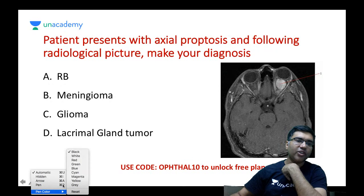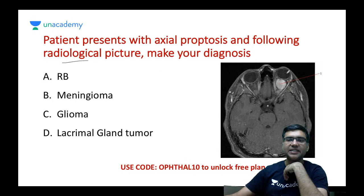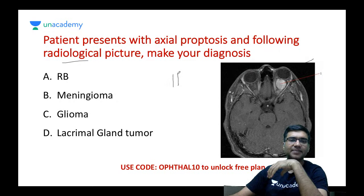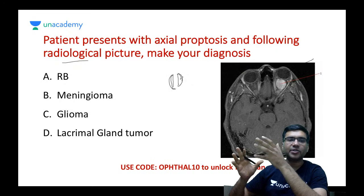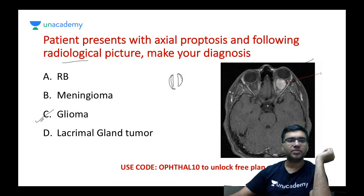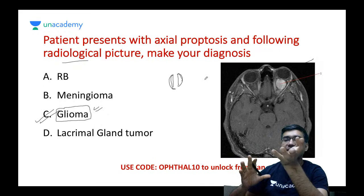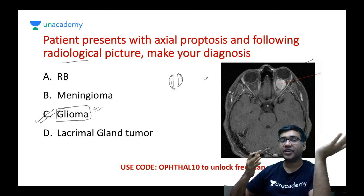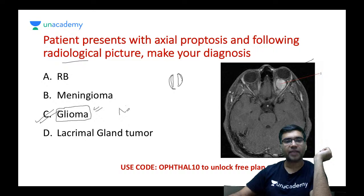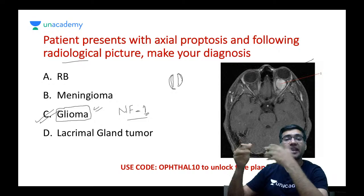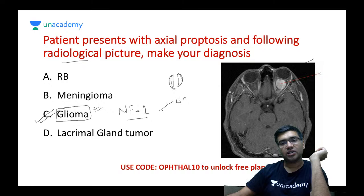A patient with axial proptosis presents with the following radiological picture. You can see the eyeball and below it a mass where the optic nerve has expanded along with its sheath — both nerve and sheath enlargement. This patient is suffering from optic nerve glioma. The phacomatosis associated with glioma is neurofibromatosis type 1, which can have nodules in the iris called Lisch nodules and proptosis due to optic nerve glioma.